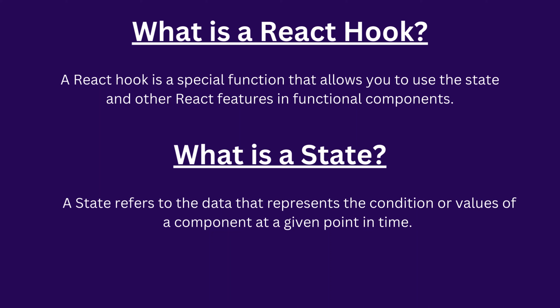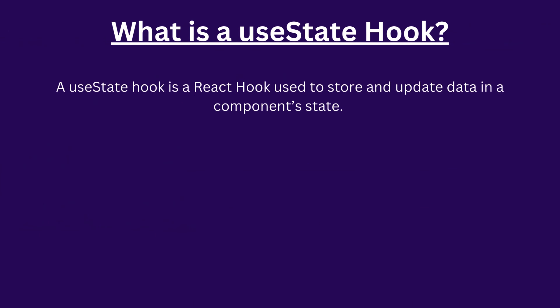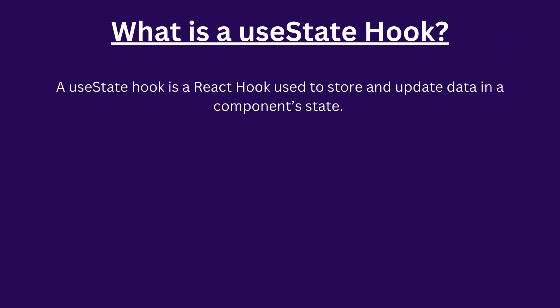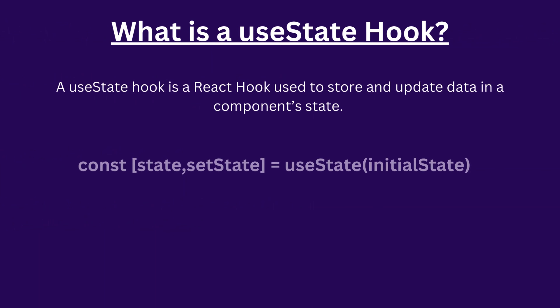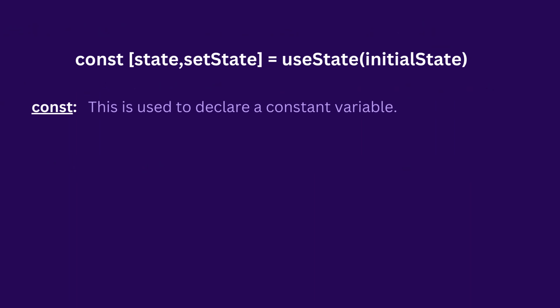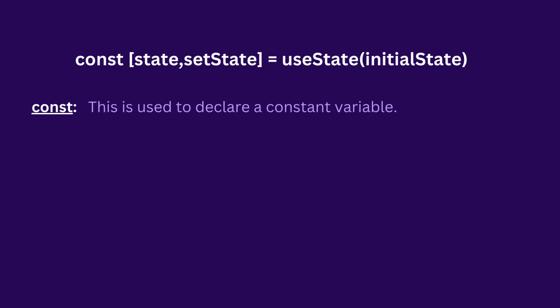Now that we have a good understanding of what the hook and its data are, let's dive into the useState hook. A useState hook is a React hook used to store and update data in a component state. To declare a state using the useState hook, we use the syntax displayed on the screen. Now let's break down each term.